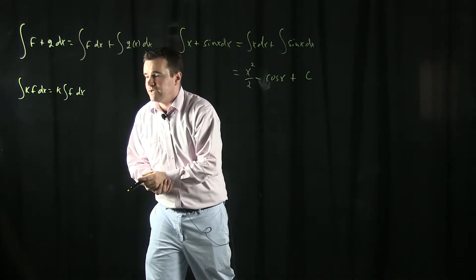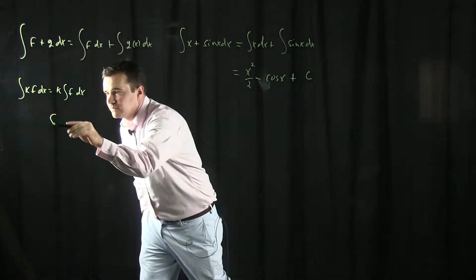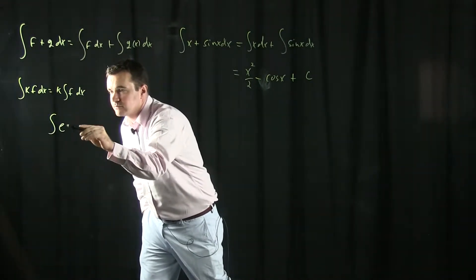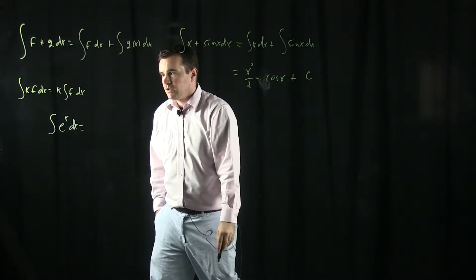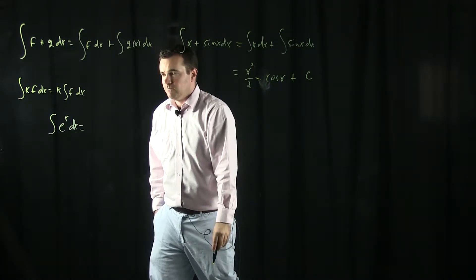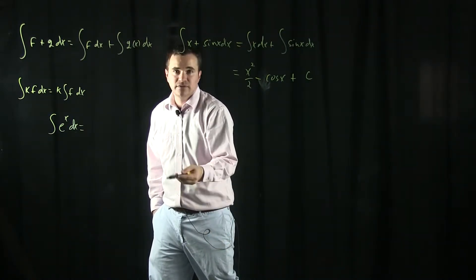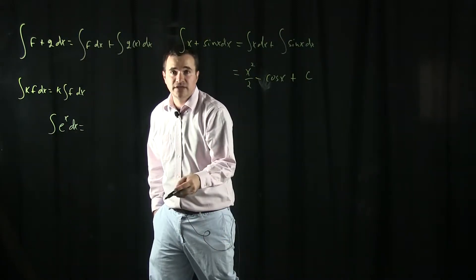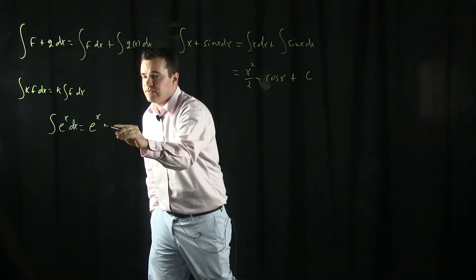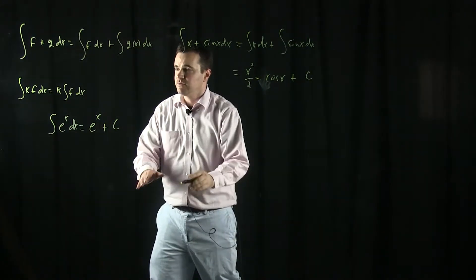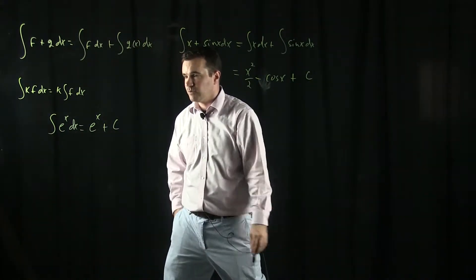Let's go on to some examples. Say I want to take the anti-derivative of e^x dx. What's the answer going to be? I want a function whose derivative is e^x. I know that e^x is its own derivative. So e^x plus any constant — take the derivative — gives me back e^x. So that gives me the nice formula.